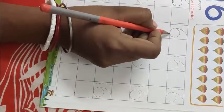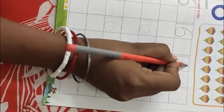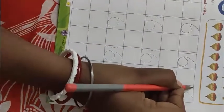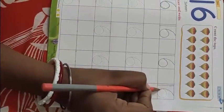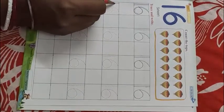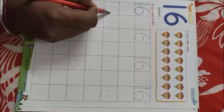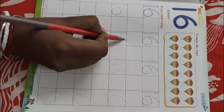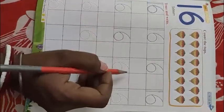Now say 1, 6, 16. Again write it in the next line. Which number we are writing? 16.